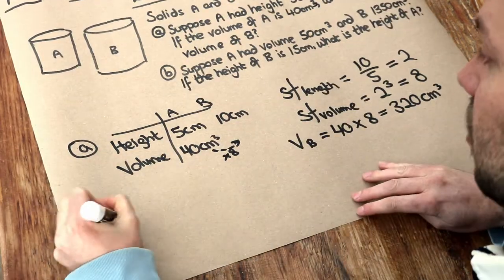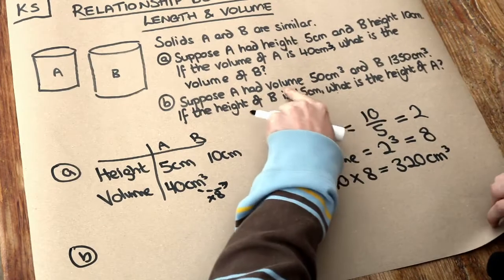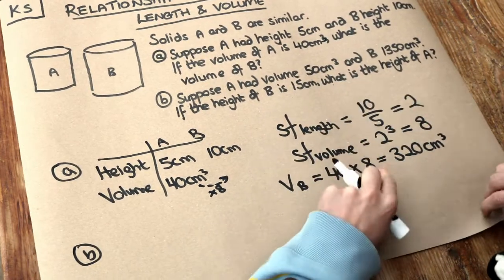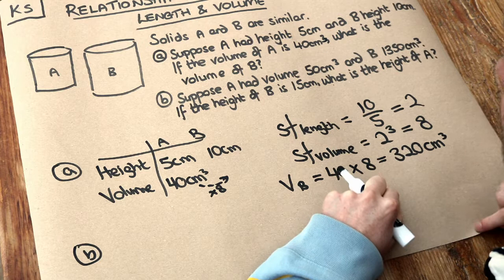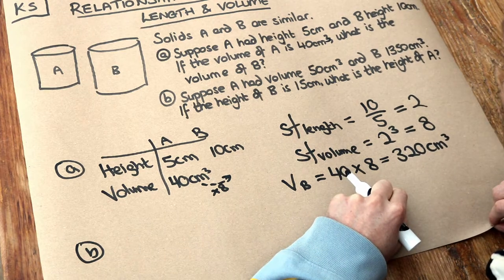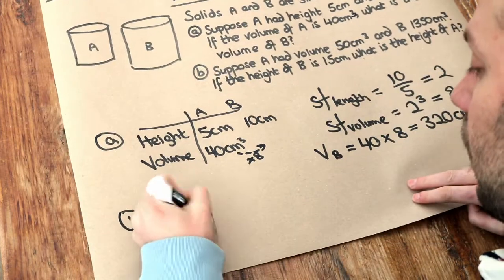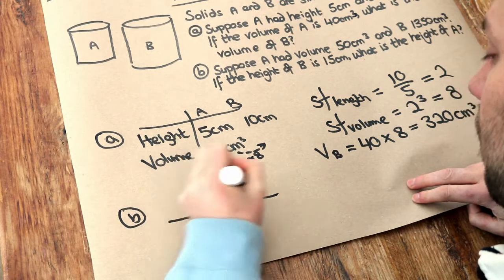What about the second part of the question? Suppose A had volume 50 centimetres cubed and B 1,350 centimetres cubed. If the height of B is 15 centimetres, what is the height of A? Well, I find the table helpful again just to lay out our information.